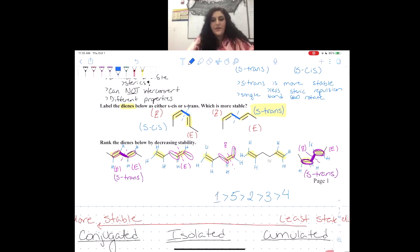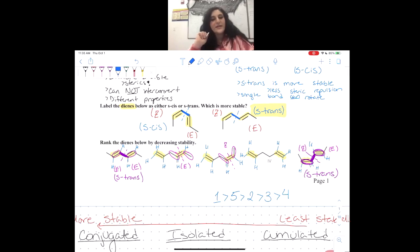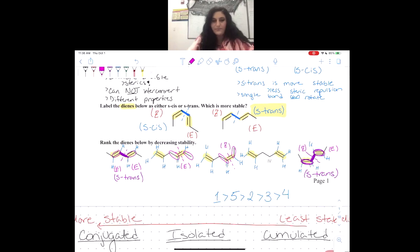To reiterate: one and five are more stable than two, three, and four because they are more conjugated and more substituted. Between two, three, and four, molecule four was by far the least stable — isolated and with two monosubstituted double bonds. Between two and three, we determined which is more stable by analyzing the configuration of the disubstituted double bonds — one was E and one was Z, and E is more stable than Z. That's all for today!